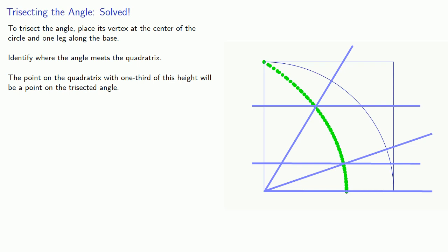What's worth noting here is this isn't just limited to the trisection of an angle. We can replace one-third with any fractional amount that we want. The quadratrix allows us to take an angle and divide it into any number of pieces.